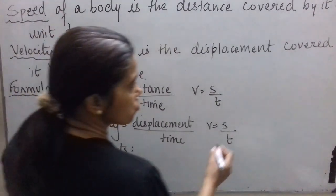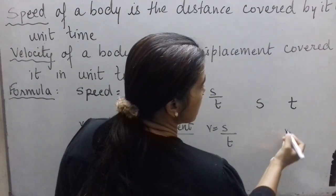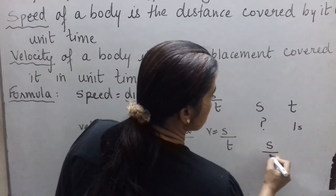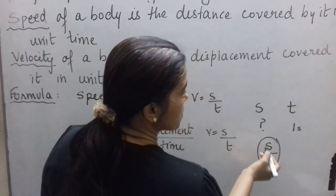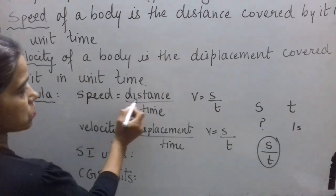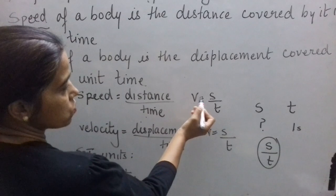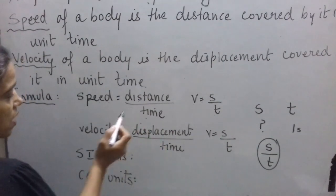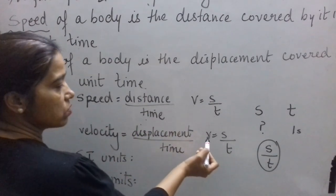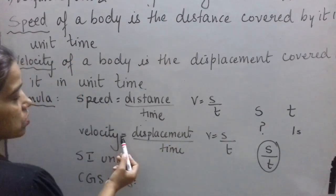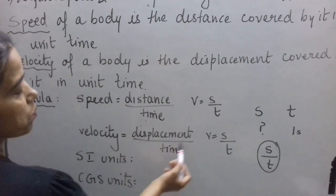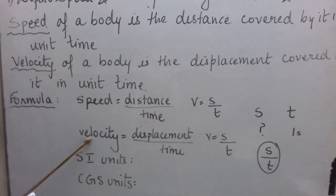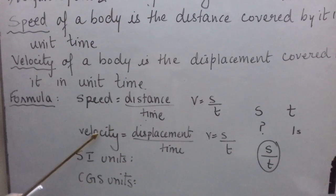If S is the distance covered in time T, then in 1 second the distance covered is S ÷ T. This gives us the speed formula: V = S ÷ T, where S represents distance and T represents time. Similarly, velocity equals displacement divided by time. Since displacement magnitude is also represented by S, the formula looks the same, but for velocity S means displacement. For straight-line motion, speed and magnitude of velocity are equal.